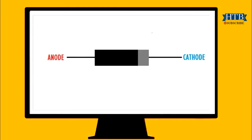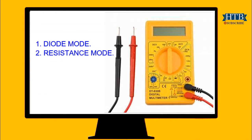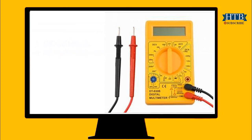Mostly the silver strip marks the cathode side. How to test a diode: digital multimeters can test diodes using one of two methods — diode test mode, which is almost always the best approach, and resistance mode, typically used only if a multimeter is not equipped with a diode test mode. Today I am not going to talk about resistance mode.